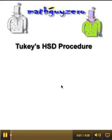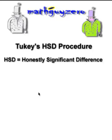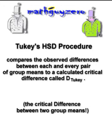Tukey's HSD procedure, also called the Tukey test. HSD stands for Honestly Significant Difference — it is the most sincere of the post hoc tests. What this test does is compare the group means from your ANOVA table to see if they're significantly far enough apart. How significant is significant? That's what the Tukey test does.